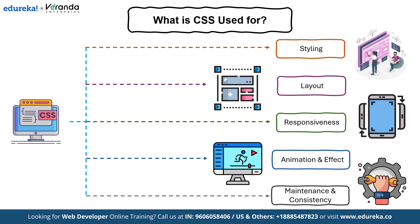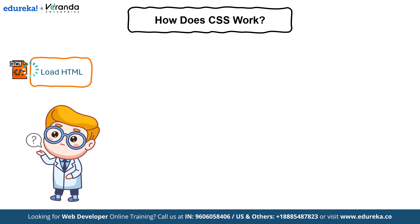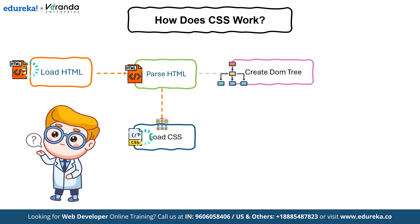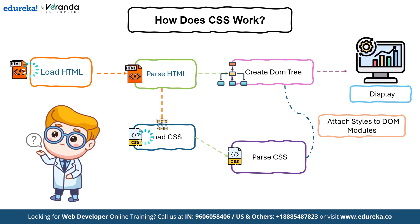Now that we have understood why CSS is so important, let's dive into how CSS actually works behind the scenes. When you load a web page, the browser starts by loading the HTML file. The HTML is the structure of your web page. The browser parses the HTML and builds the DOM tree, which maps all elements in your web page. At the same time, the browser loads the CSS file linked to your HTML, parses it to understand the styling rules like colors, fonts and layouts, and attaches those CSS styles to the DOM tree. Finally, it renders the page on your screen displaying the fully styled web page.